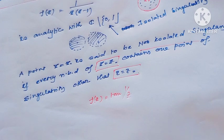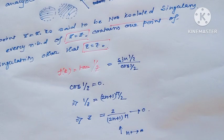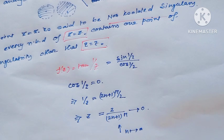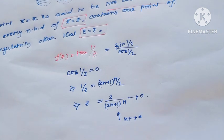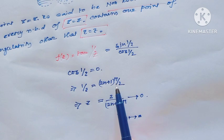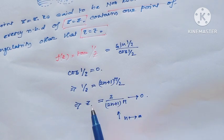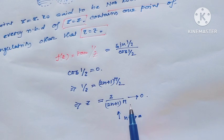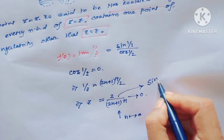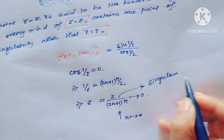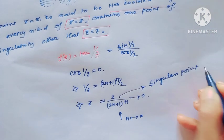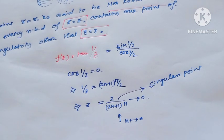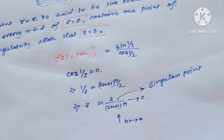Consider f(z) equal to tan(1/z), which is sin(1/z) over cos(1/z). The singularities occur when cos(1/z) equal to zero, that implies 1/z equal to (2n+1)π/2, which implies z equal to 2/[(2n+1)π]. These are the singular points of this function.